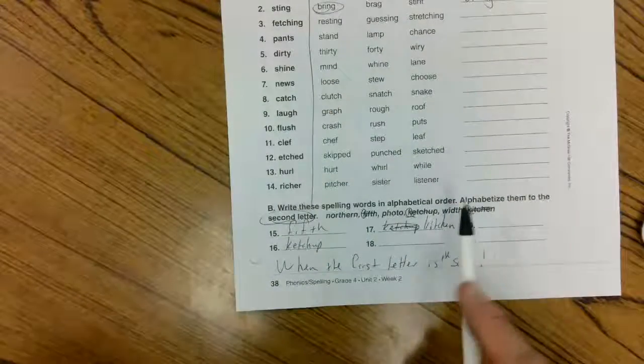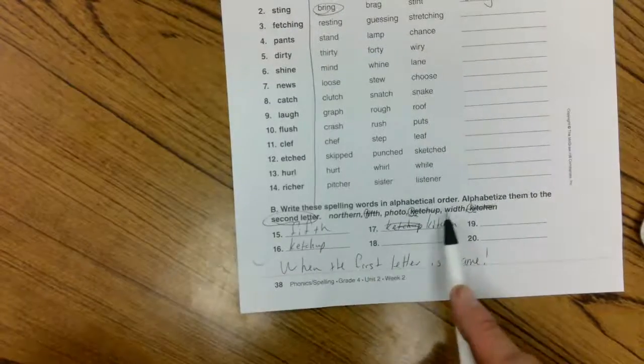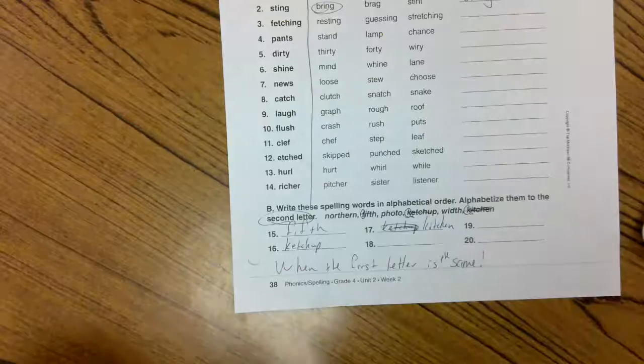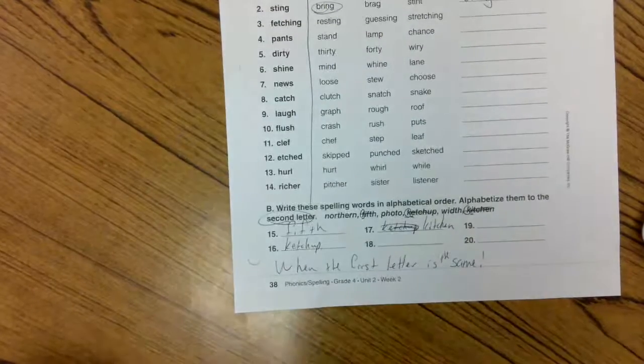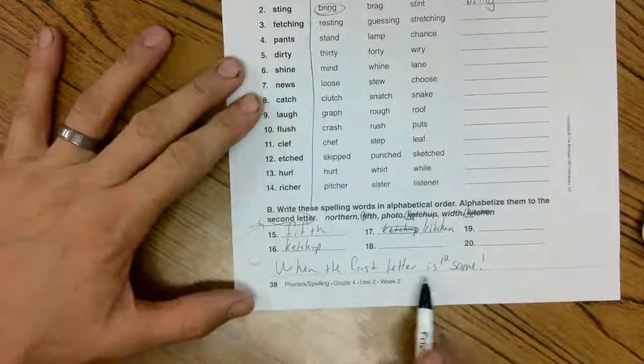Then you're going to keep going. And the next ones all have different first letters. So northern, photo, and width would be 18, 19, 20. So those you only look at the first letter. Okay. So don't get confused by that second letter. We only use the second letter when the first letter is the same.